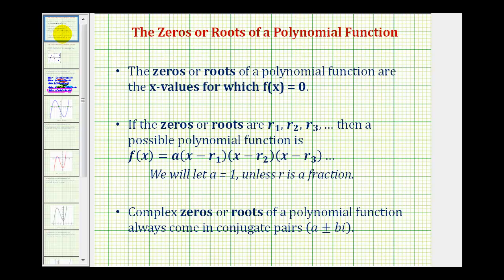So for a quick review, we know these zeros are the x-values for which the function is equal to zero. If our zeros or roots are r₁, r₂, r₃, and so on, then the polynomial function must have a factor of (x - r₁), (x - r₂), and (x - r₃). Notice these factors are x minus the known zeros.